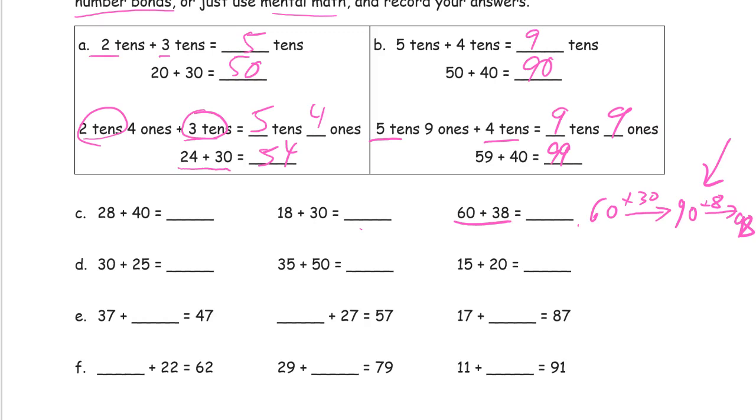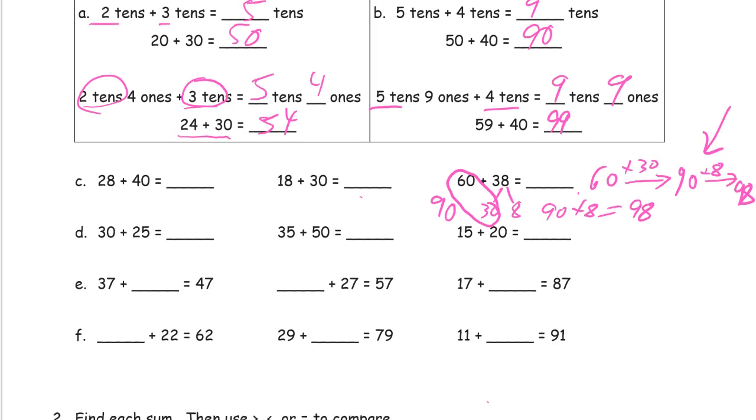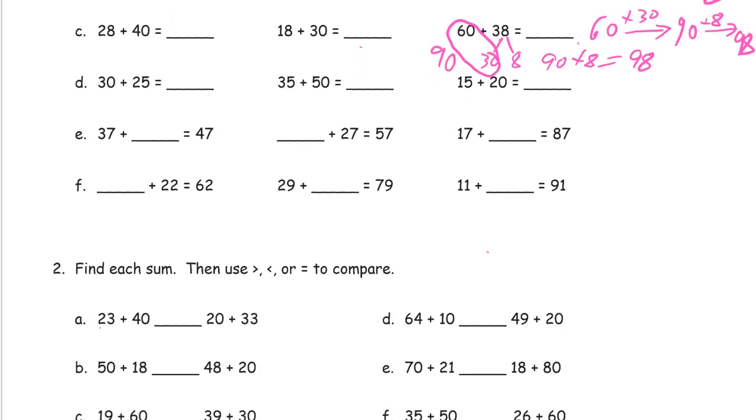If I'm going to add this using number bonds, I'm going to think of the 38 as 30 and 8. And that's going to make 90. And then I'll have 90 plus 8, 98. So there's an example of what it would look like if you used the arrow way to do it. This is how it would look to use number bonds to do it. If you're writing these out, that's how you show it.